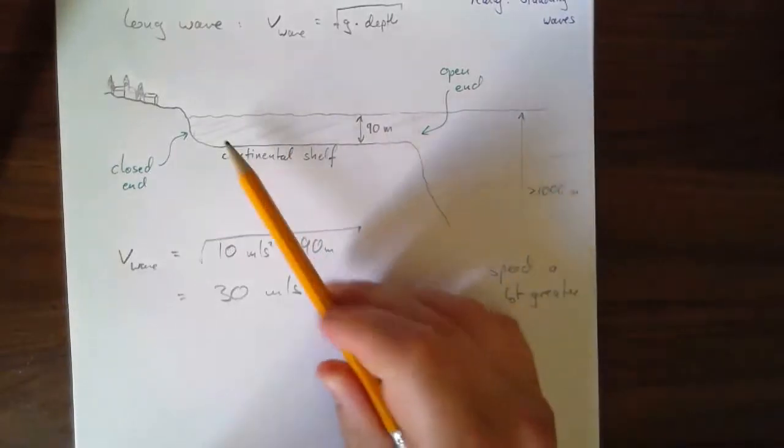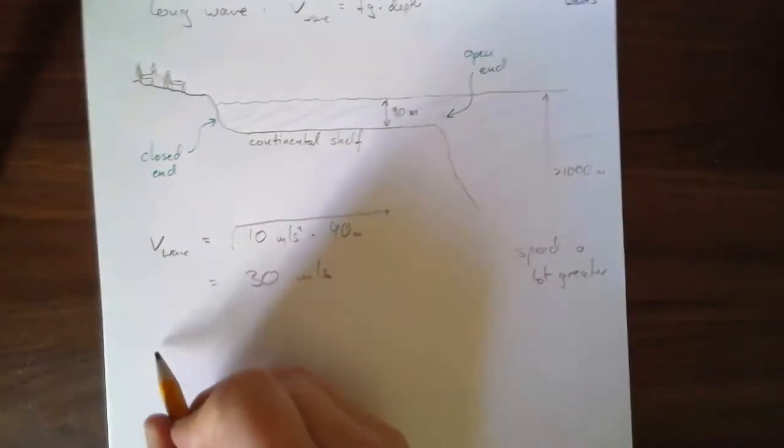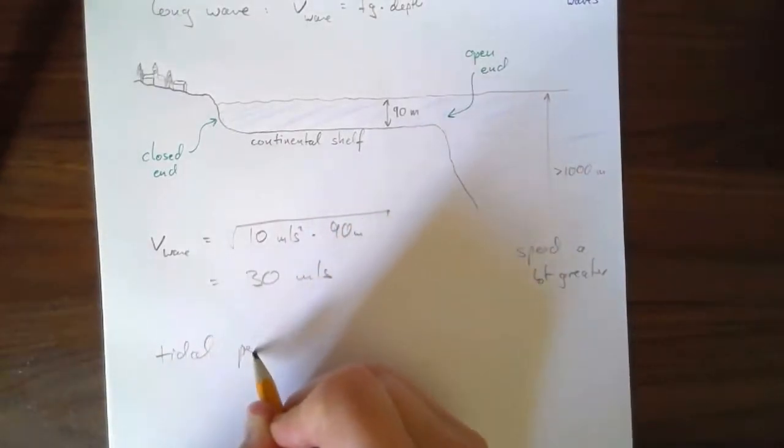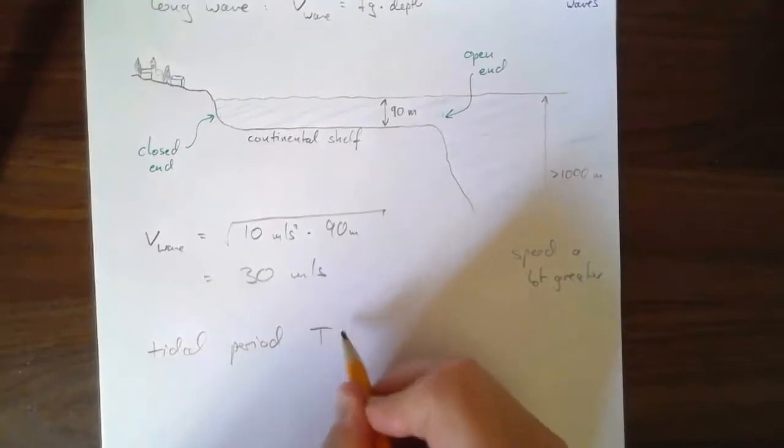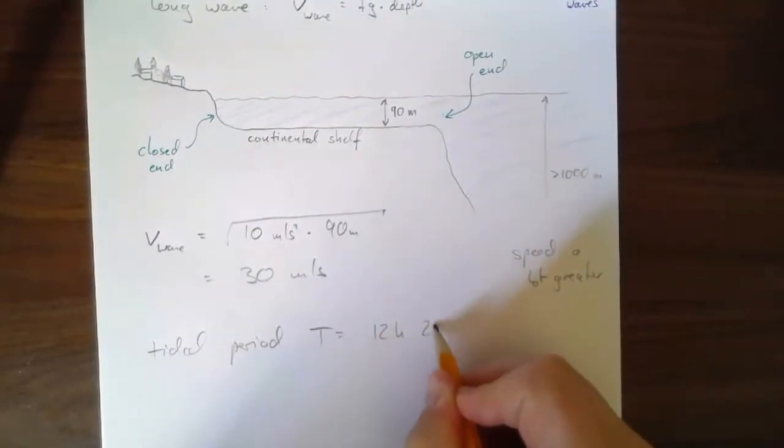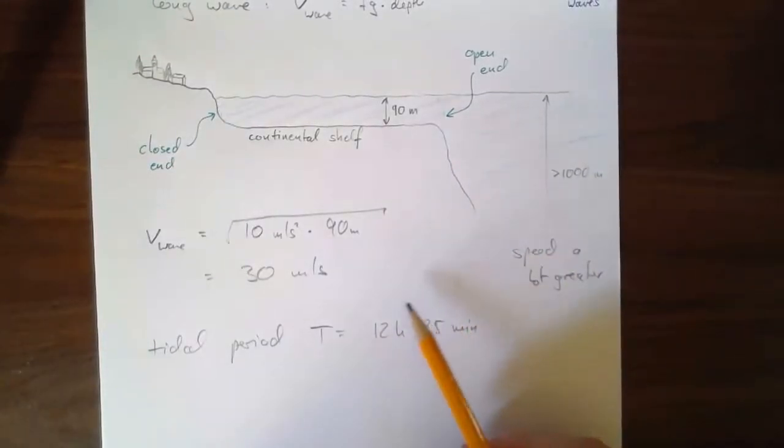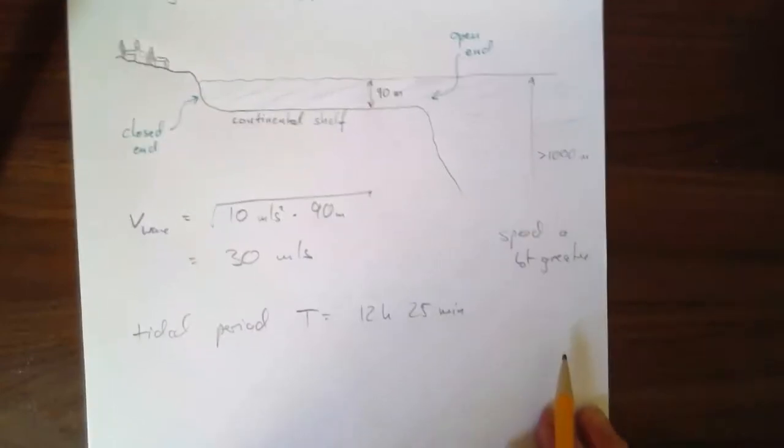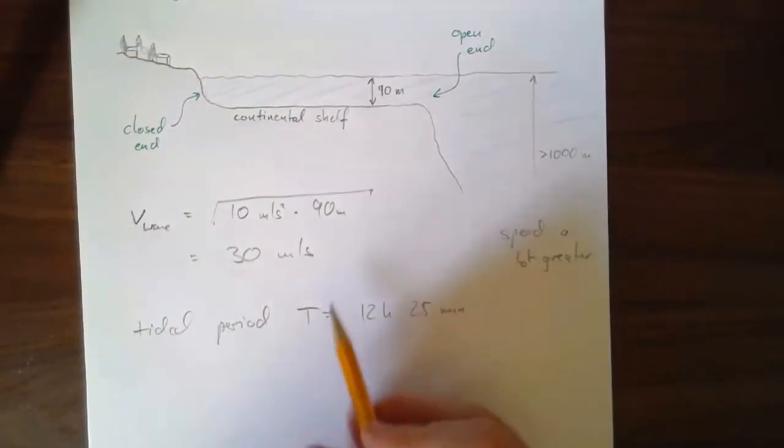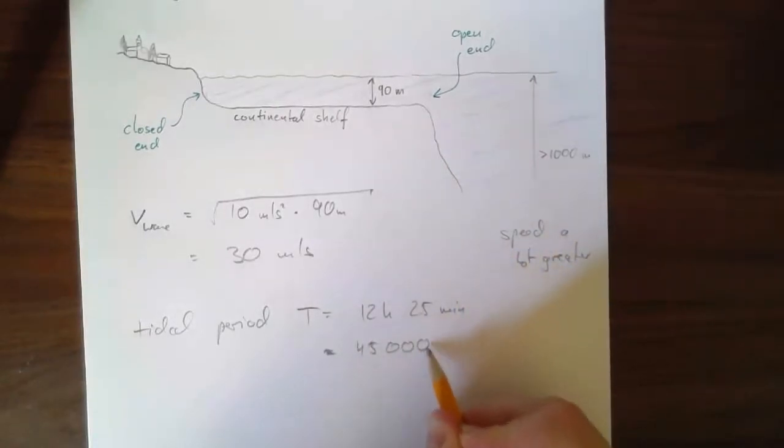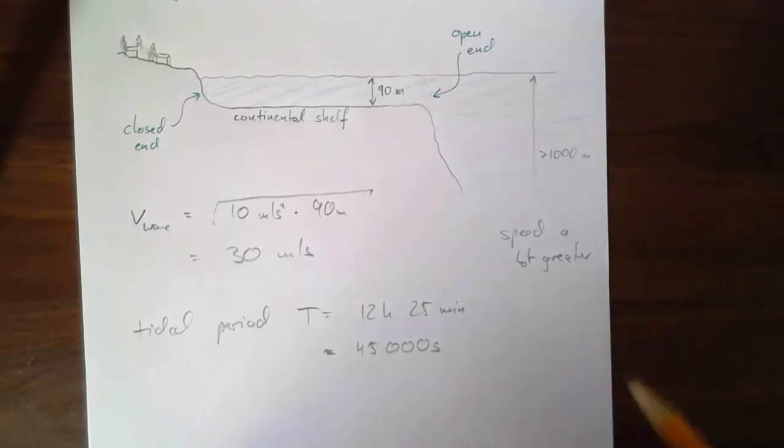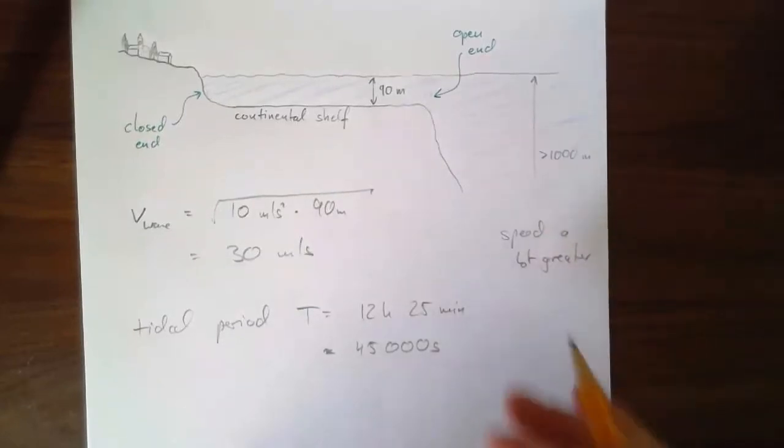So that implies we can form standing waves. Now, the period T is, as I said, about 12 hours and 25 minutes, sort of half a day, except the moon keeps moving around the Earth. So you have to essentially catch up a bit. So what is that? That is, roughly speaking, about 45,000 seconds. That is the period of the long waves caused by the tidal forces due to the moon's gravity.